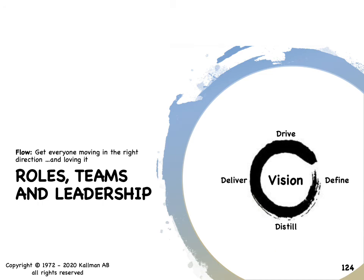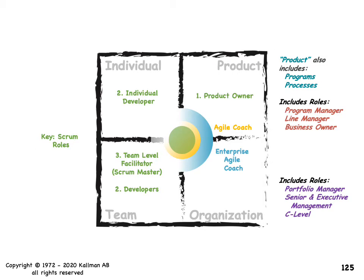In the next section, we're going to get into roles, teams, and leadership — trying to align agile scrum roles with typical organizational roles along with the leadership teams, and sort of divvy up who's doing what. In this picture, I use the four-box model that we use in the transformation slide deck extensively. You have four different boxes: the individual, team, product, and organization boxes.